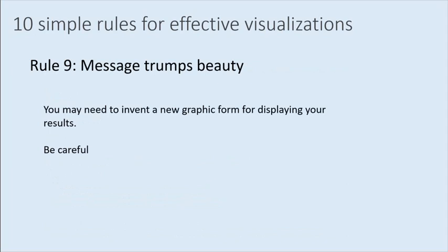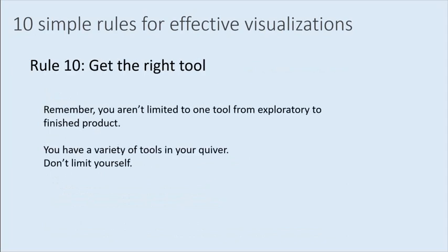Will your audience be looking at all plots at the same time — so does one need to stand out more — or will they take plots in one at a time, so relationships need to be built differently? Rule nine: message trumps beauty. You might be thinking about inventing a new graphic style, but be really careful — don't go too crazy. Rule ten: get the right tool. You have a wide variety in your toolkit: ArcMap, Tableau, Excel, PowerPoint, Paint, Illustrator, Google. You can start in one and finish in another — don't limit yourself to one tool.